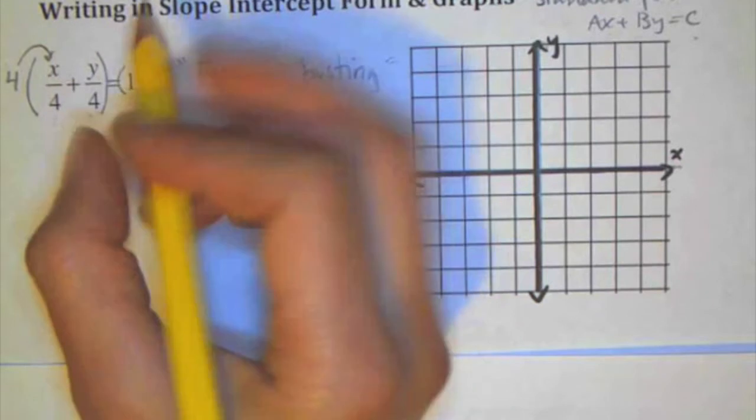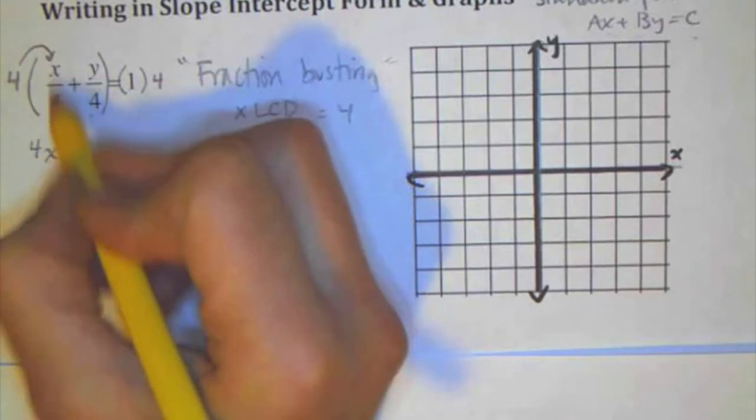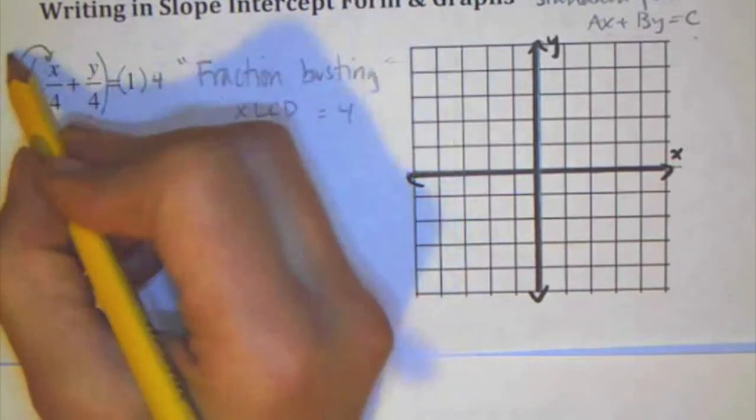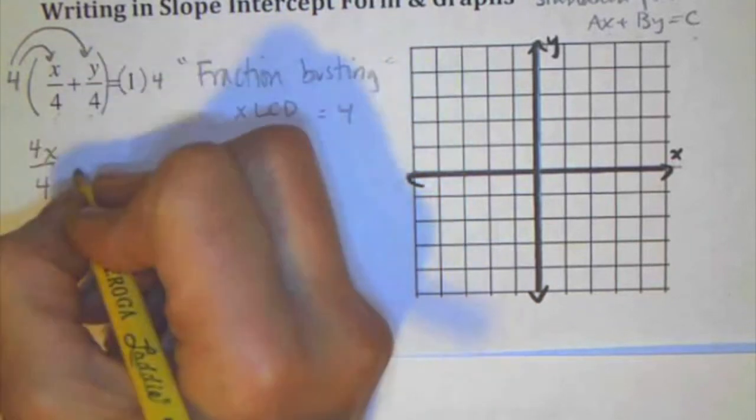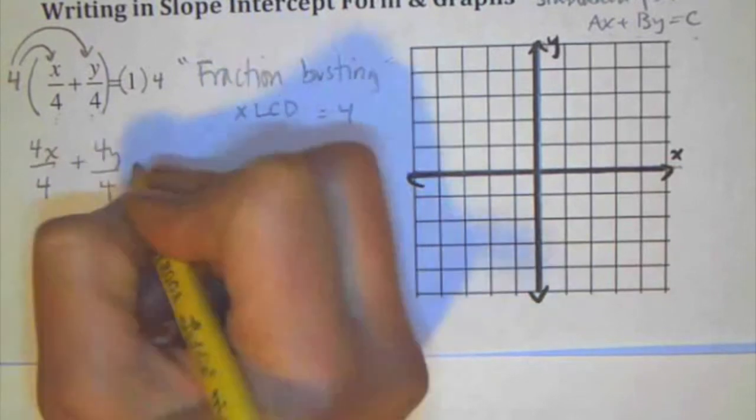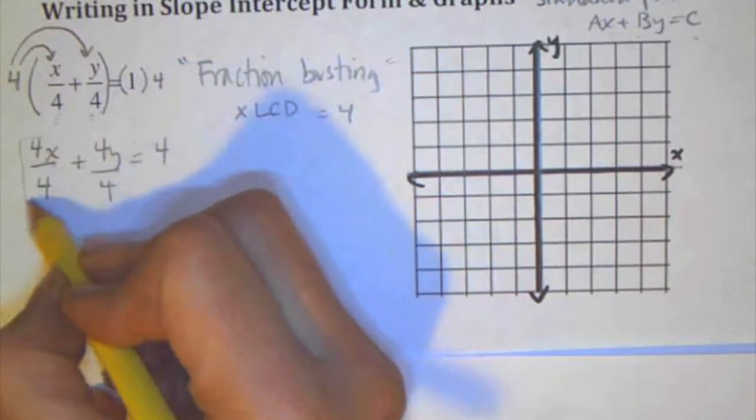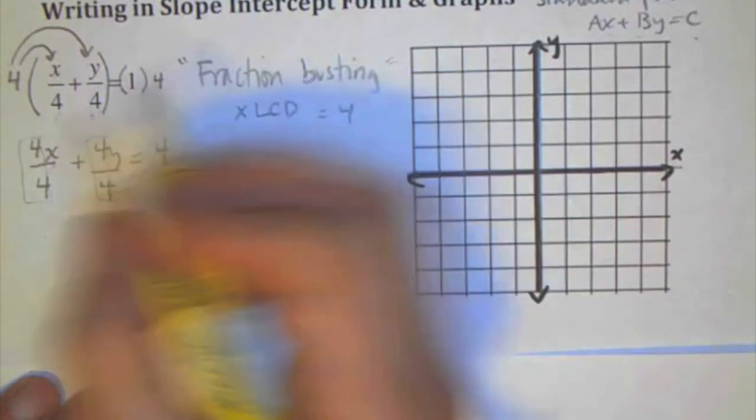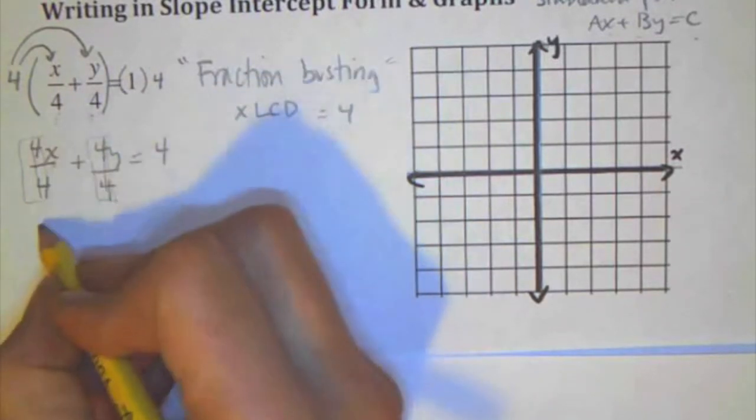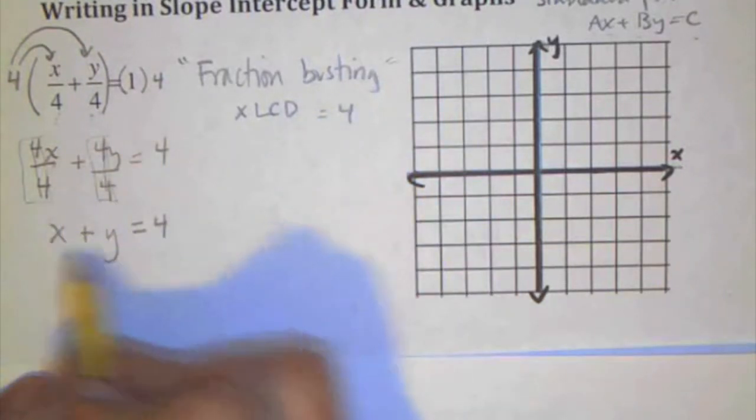So I'm going to use the distributive property. I'm going to show all the steps, although there's obviously shortcuts. So four times x over 4 is 4x over 4. Distributing through, 4 times positive y is 4y over 4, and multiplying by 4 on the other side. We have these fractions that are equal to 1 or these mighty ones. So this is just x plus y equals 4. And now we do indeed have it in standard form where Ax plus By equals C, and they're all integers.